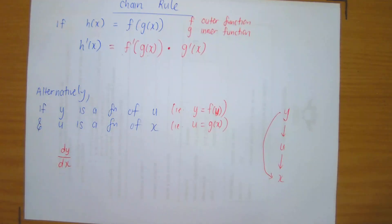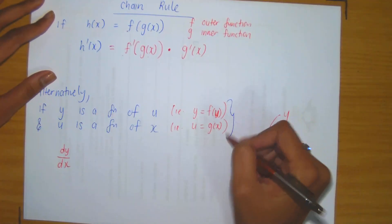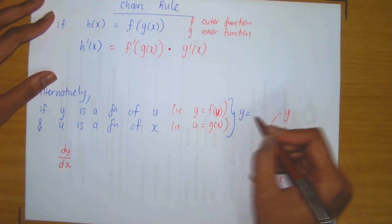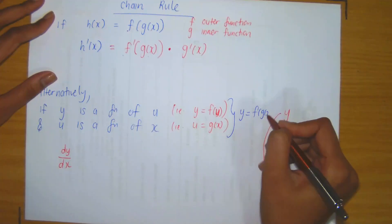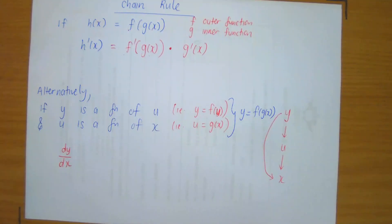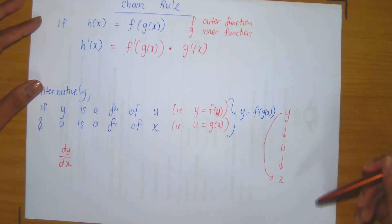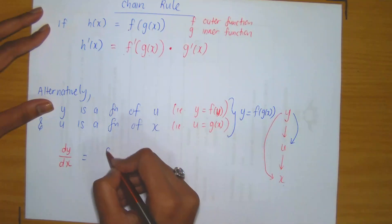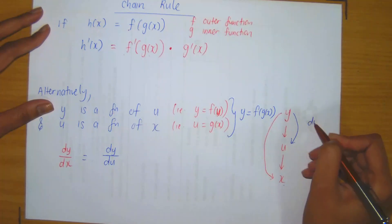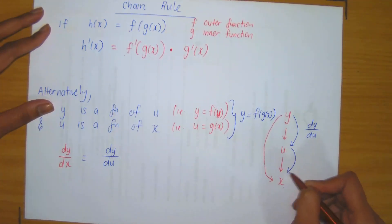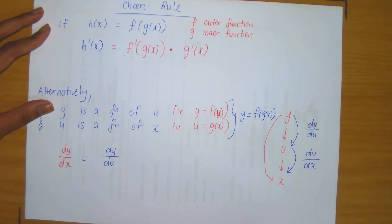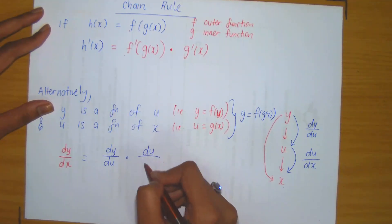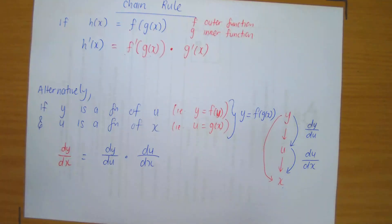Observe that since y is a function of u and u is a function of x, we have that y equals f of g of x — reverting back to our original problem of a composite function. These two formulations are equivalent. The derivative of y with respect to x equals the derivative of y with respect to u, multiplied by the derivative of u with respect to x.